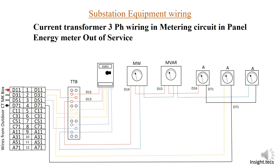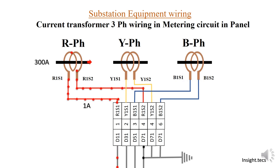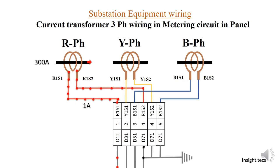Here you can see d11 coming in and d71 coming back. The current flows into the neutral and we get the neutral back. So starting from d11, the current has flowed through the metering circuit inside the panel, come back through d71, into the neutral, and back into the current transformer — completing the full circuit as you can see here.